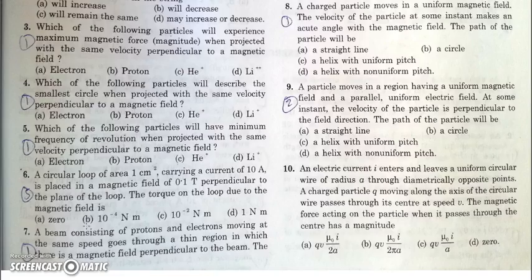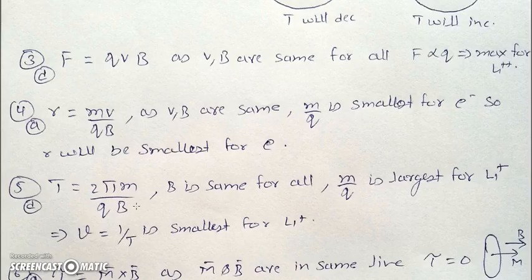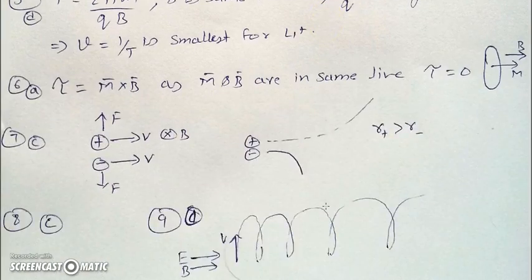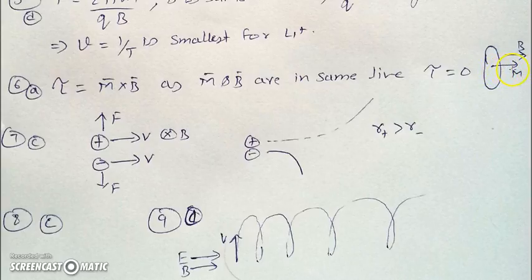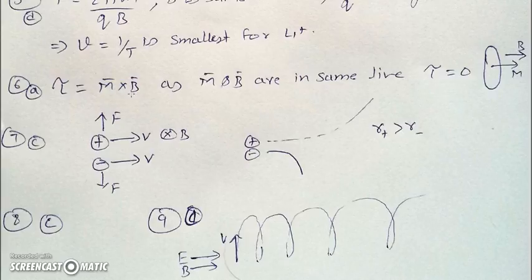In the next question, there is a circular loop with a given area and current, placed such that the magnetic field is perpendicular to the plane of the loop. We have to find the torque. Torque is given by M cross B. From the diagram, the magnetic field is perpendicular to the plane of the loop, so it is parallel or anti-parallel to the magnetic moment. In both cases M and B are in the same line, so torque is zero as the angle between M and B is either 0° or 180°.